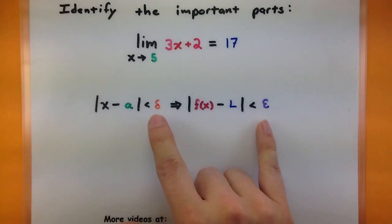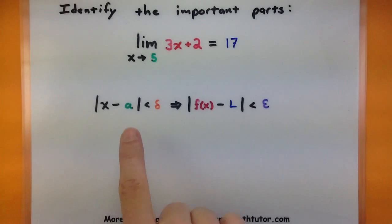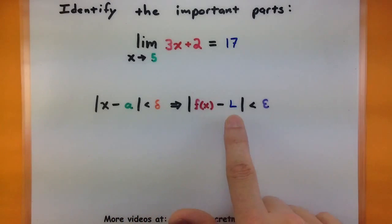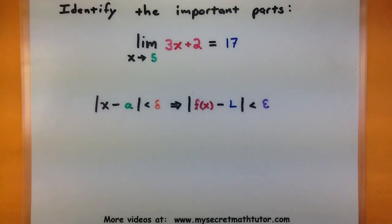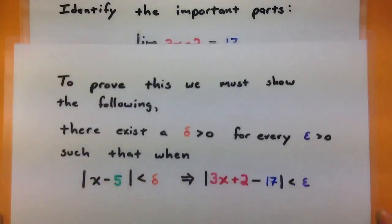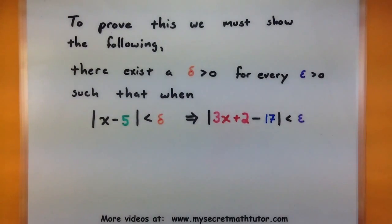We'll get more with epsilon and delta in just a bit, but definitely identify your a, your function, and the limit. Since we are trying to prove that the limit exists, we have to show that the definition is satisfied. Basically, in a nutshell, I have to show that there exists a delta for every epsilon greater than 0,